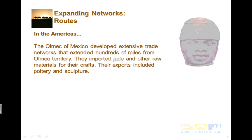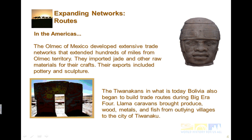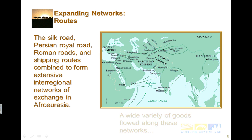In the Americas and routes: the Olmec of Mexico developed extensive trade networks that extended hundreds of miles from the Olmec territory. They imported jade and other raw materials for their crafts, and they exported pottery and sculpture. The Tawanecans of today's Bolivia also began to build trade routes during this era, and llama caravans brought produce, wood, metals, and fish from outlying villages to the city of Tawanec. Also, the Silk Road, the Persian Royal Road, and Roman roads and shipping routes combined to form extensive networks across Afro-Eurasia.